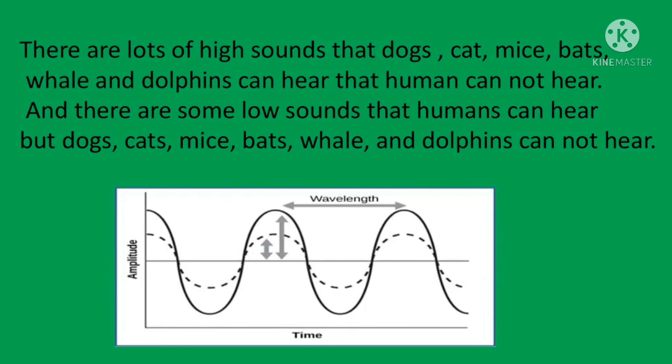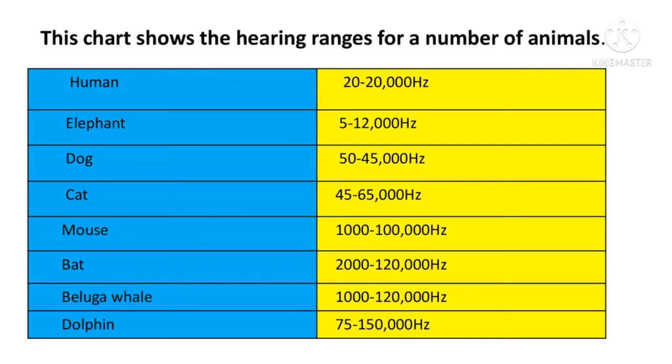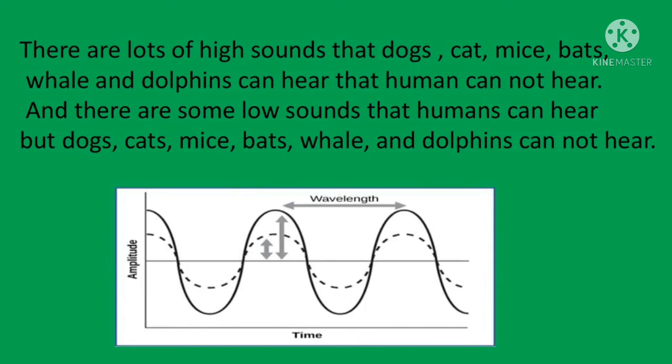Light does not really affect sound. Sound is made of vibrations in air, water, or solid material, while light is made of vibrations in electric and magnetic fields. Even if light were not so fast, the electric and magnetic fields associated with a typical light beam are much smaller than those from a capacitor or magnet. To interact with the vibration of particles in a sound wave, you would probably need a huge laser pointed at the material through which sound was passing.